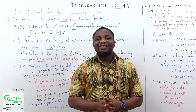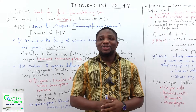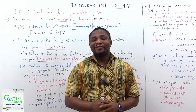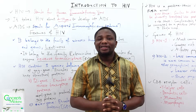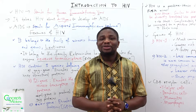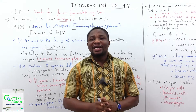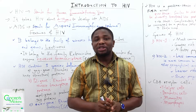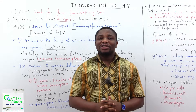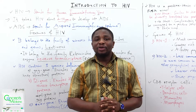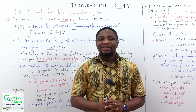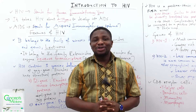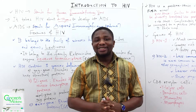Welcome to Concept in Medicine. In today's tutorial, we are going to be looking at the introduction to HIV. But before we begin, let's revise the question I asked in the previous session: which structure is responsible for the production of cerebrospinal fluid? The answer is the choroid plexus. Congratulations to all those who got it right.